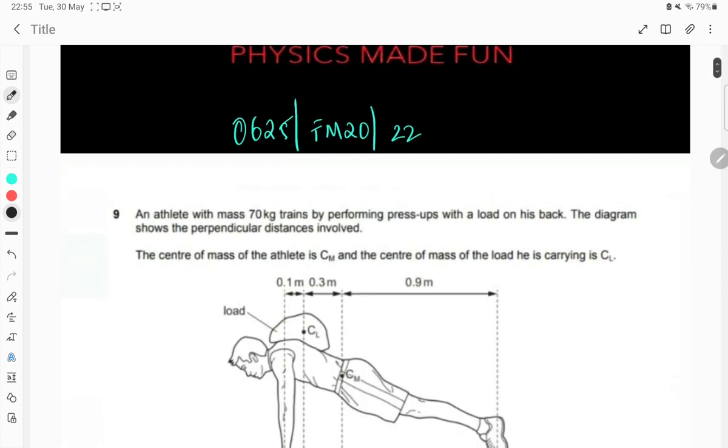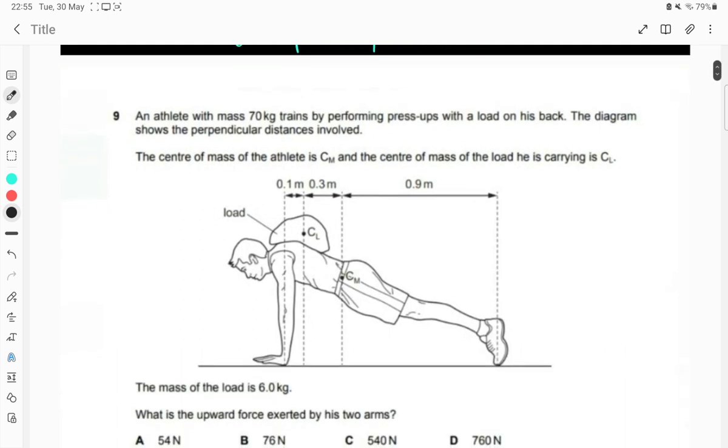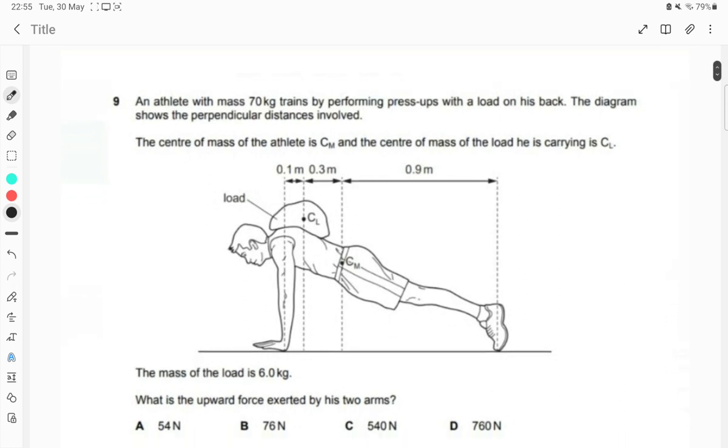Now here's a question taken from FM20 paper 2 variant 2, question number 9. Reading out the question for you all: an athlete with a mass 70 kg trains by performing press-ups with a load on his back.